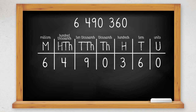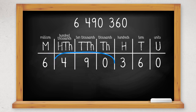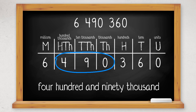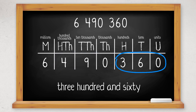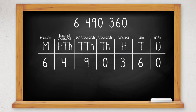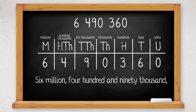This will help us now to write the number in words. We know that we have six million. We now need to look at the hundred thousands, ten thousands, and thousands columns — we have four hundred and ninety thousand. We then look at the hundreds, tens, and units columns — here we have three hundred and sixty. So the number in words is six million, four hundred and ninety thousand, three hundred and sixty.